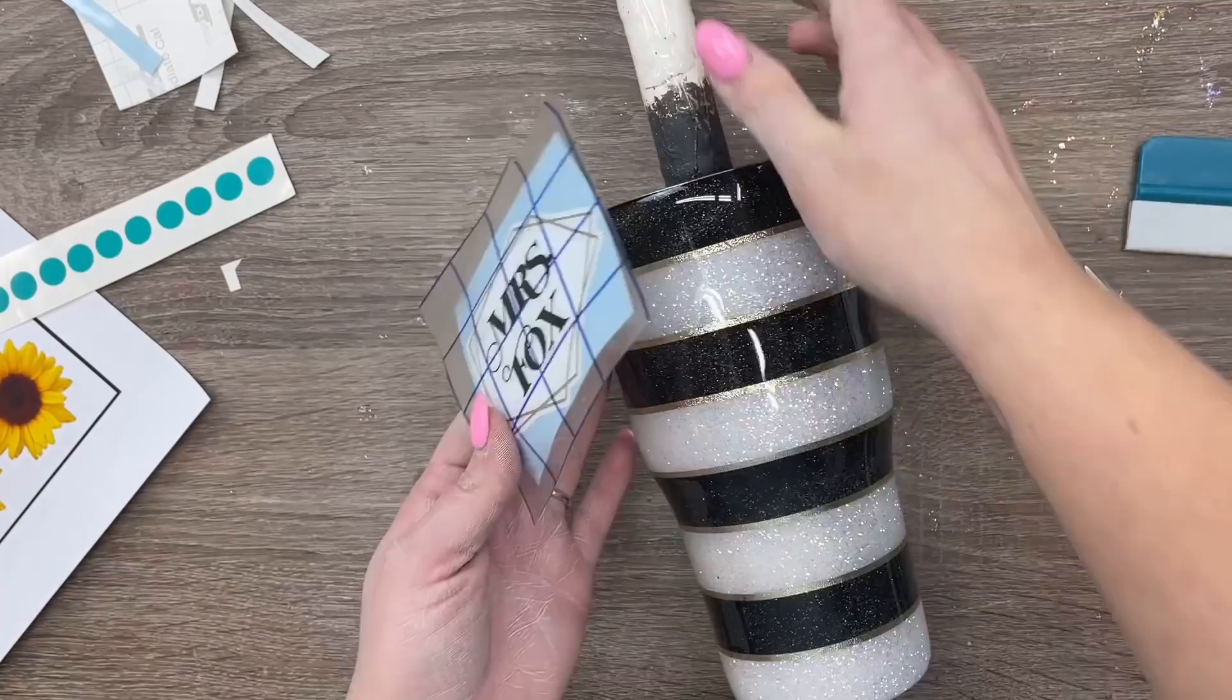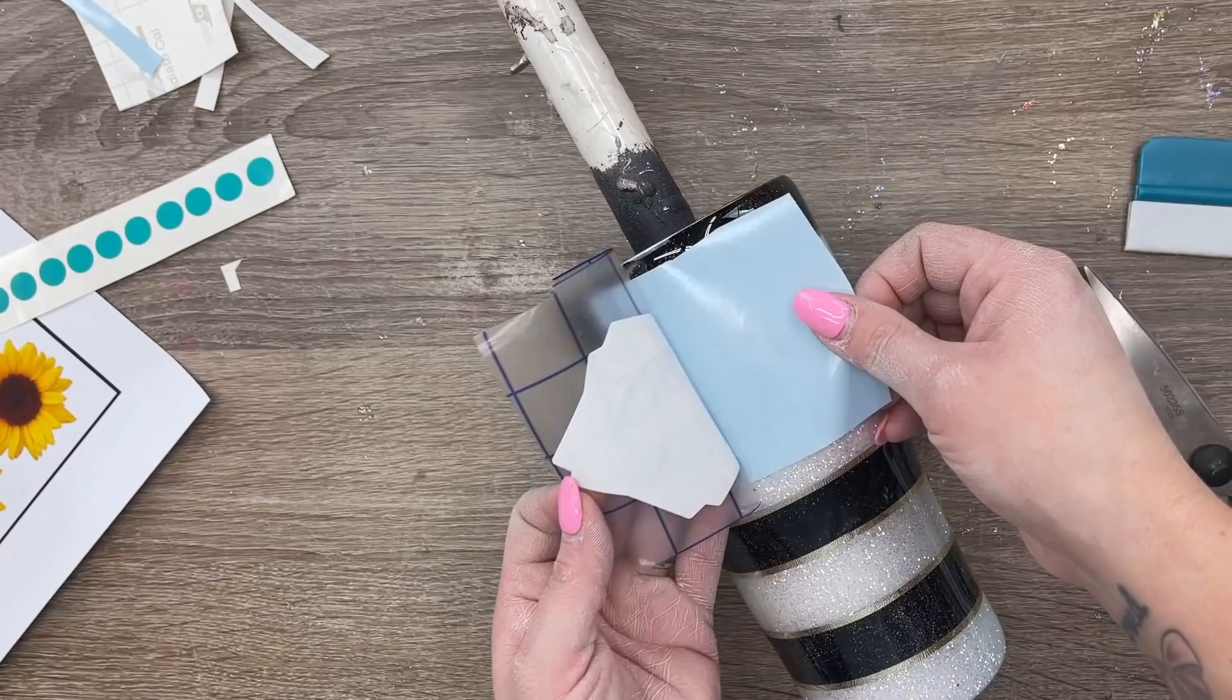Then I'm just going to transfer this name decal onto my cup like I normally would. Always measure twice, cut once. Once that's on there, I'm going to place the remainder of my decals on by hand.